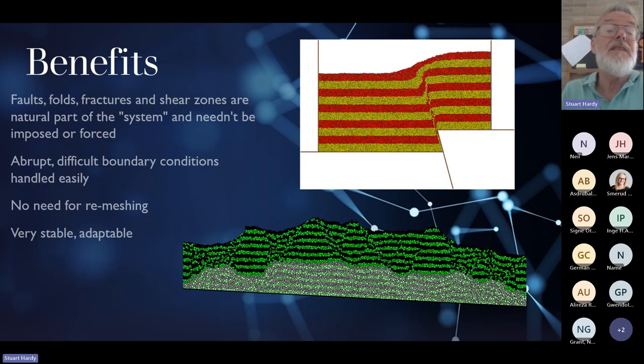The laptop you have probably has at least four cores, if not eight, meaning eight or 16 threads. That's computational ability increasing month by month almost. What's the benefit of using discrete element modelling? In many ways, faults, folds, fractures and shear zones are a natural part of the system. We're not saying there must be a fault here. Yes, we're imposing boundary conditions, but the rest essentially emerges. It's an emergent system.